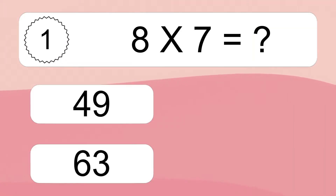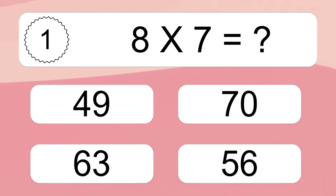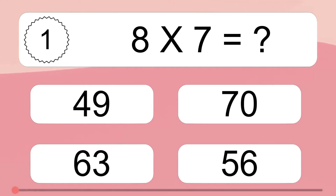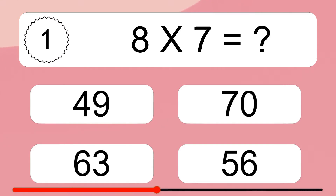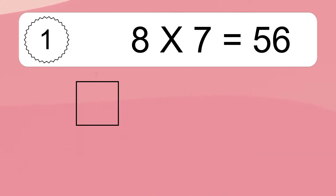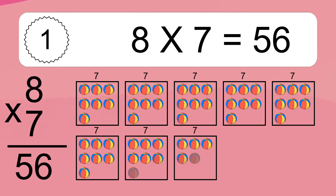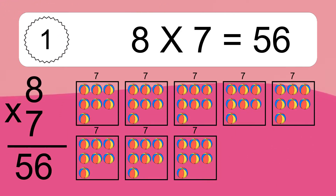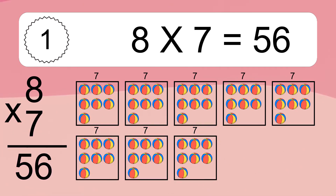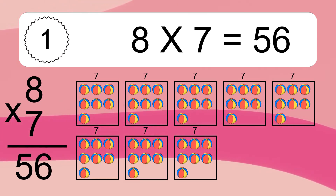8 times 7 equals what? 8 times 7 equals 56. We have 8 boxes, and each box has 7 colorful balls inside. If you count all the balls in all the boxes together, you will have 8 times 7 balls. This equals 56 balls.